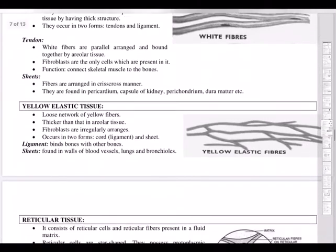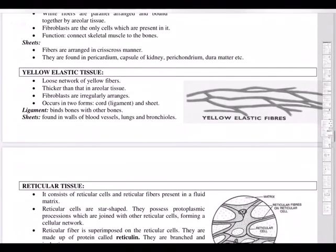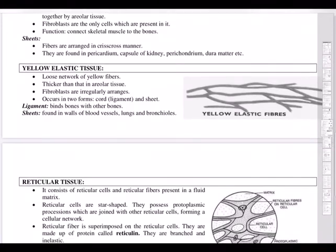Yellow elastic tissue is a loose network of yellow fibers, thicker than areolar tissue, and is present in ligaments. Whenever you are playing sports, take care of your ligaments — they are the only structures without a blood supply, so there is no regeneration if damaged. Yellow elastic tissue is also found in the walls of blood vessels, lungs, and bronchioles.